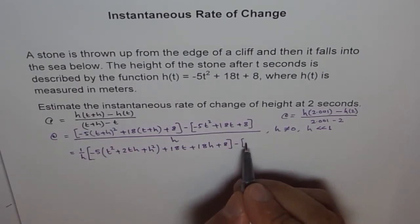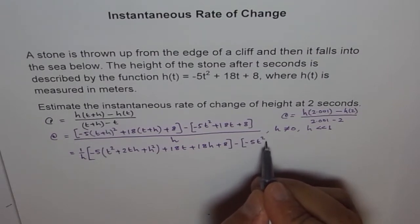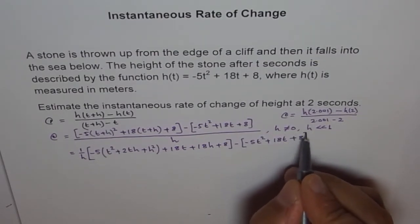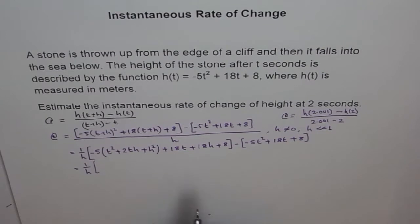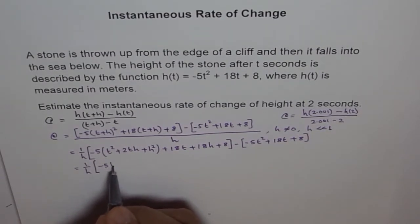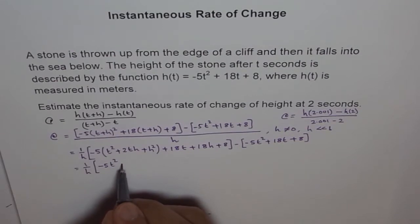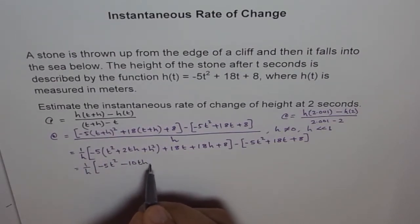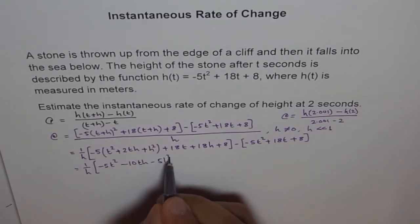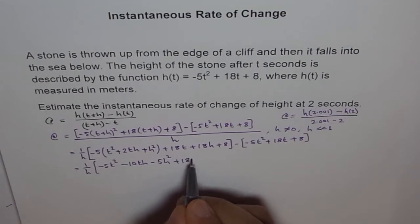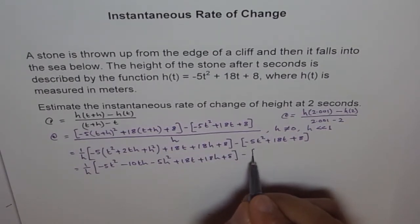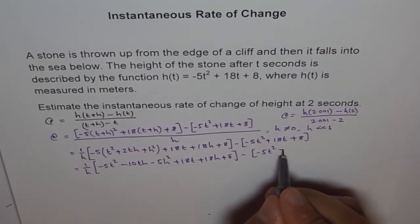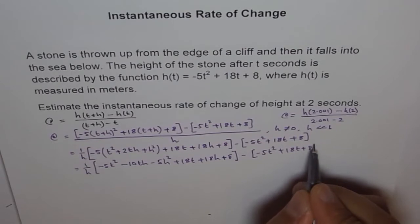Minus -5t² + 18t + 8. Now, we can simplify it further. So, we will open the brackets and then see what happens. So, -5t², I am multiplying everything with -5, so, -10th - 5h². And then, this is +18t + 18h + 8 - 5t² + 18t + 8.